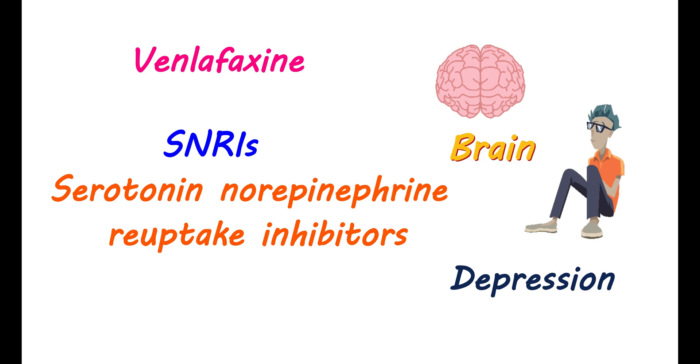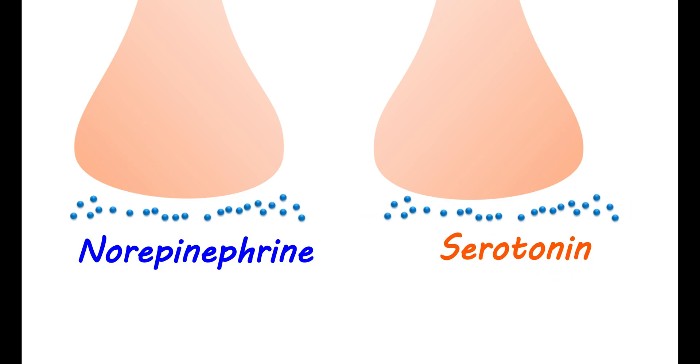Venlafaxine inhibits uptake of these chemicals into the neurons in your brain. Normally, neurons in your brain can release neurotransmitters like norepinephrine and serotonin. However, their action is limited by their reuptake back into the neurons from where they are released. Specialized transporters exist on these neurons. Through these transporters, serotonin and norepinephrine are taken back into the neurons. This is a protective mechanism to control their levels in the brain.